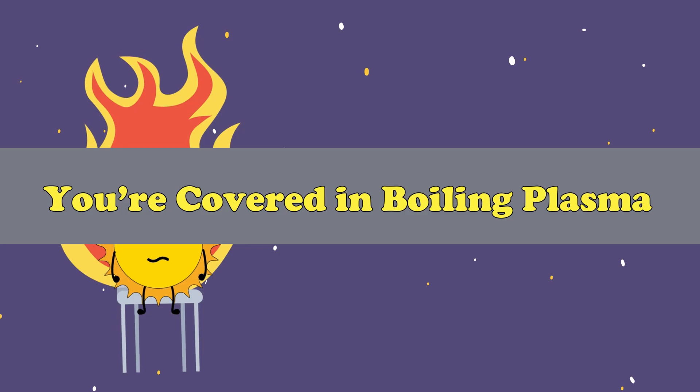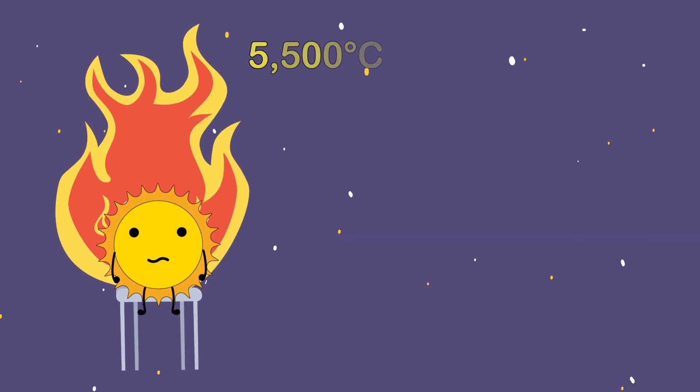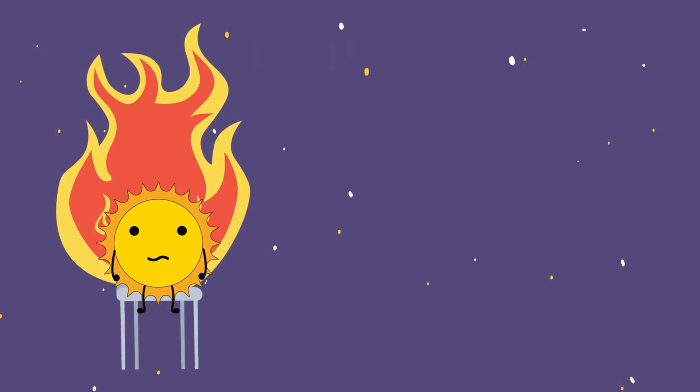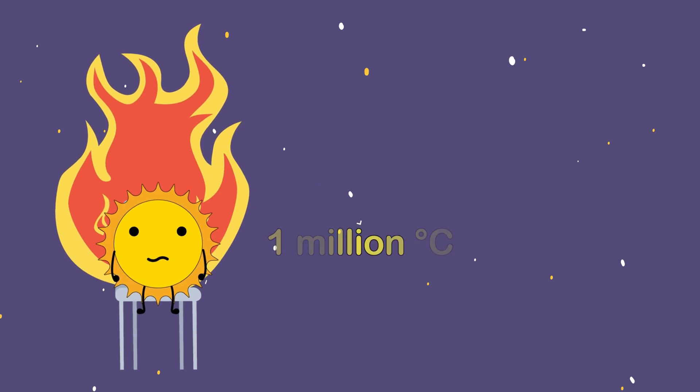You're covered in boiling plasma. The surface of the sun is 5,500 degrees Celsius. 10,000 degrees Fahrenheit. But its outer atmosphere, the corona, is even hotter, reaching over 1 million degrees Celsius.